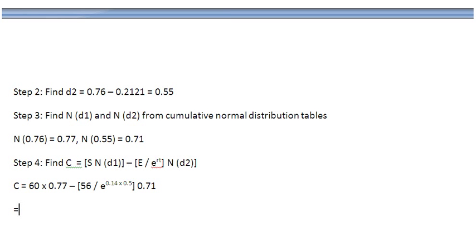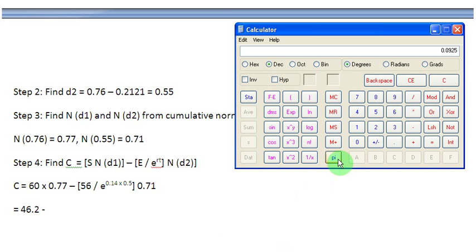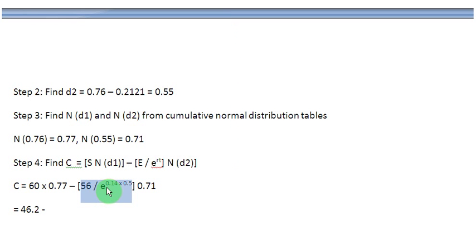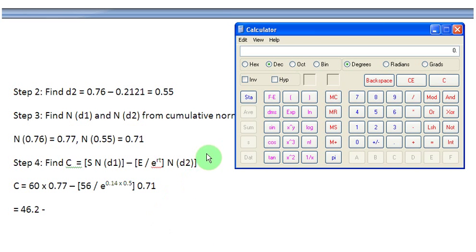Now is equal to 60 times 0.77 gives me 46.2. And then minus, I'm going to do that thing on our calculator here. Let's see how much do we get. First of all, let us solve the denominator E raised to the power of 0.14 times 0.5. I don't have an E function on this calculator, the desktop calculator.